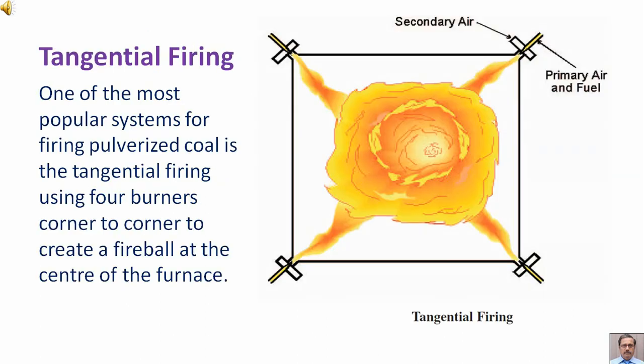Before discussing burner tilt, we have to discuss tangential firing. One of the most popular systems for firing pulverized coal is tangential firing, using four burners corner to corner to create a fireball at the center of the furnace. Here in the diagram, we can see the fireball.